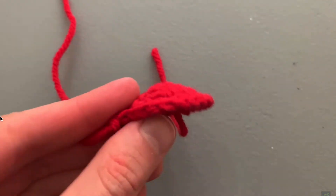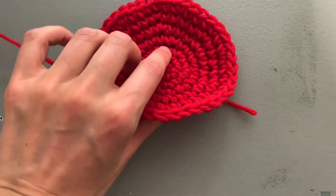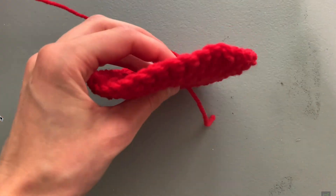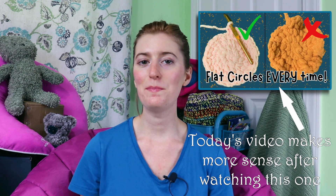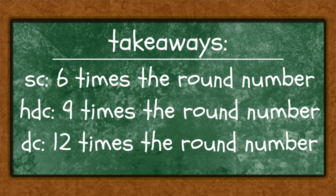When we crochet circles we want them to lie flat, and that means we must follow the rules of math. In a previous video I explained some of those rules. The big takeaways were two things: first, there is a mathematically correct number of stitches to use — for single crochet we want multiples of six, half double crochet multiples of nine, and double crochet multiples of twelve.